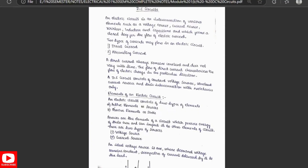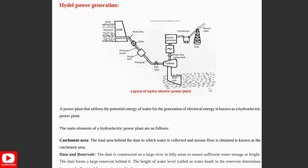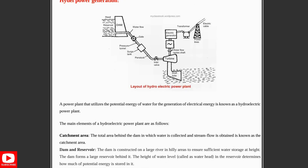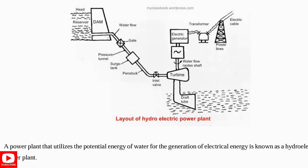Next we move to the block diagram approach covering hydel, nuclear, solar, and wind power. For hydel power energy, you have to know the block diagram properly and explain each component — how water is stored in the dam, how it flows through a gate, the pressure tunnel, surge tank, penstock, and inlet valve.